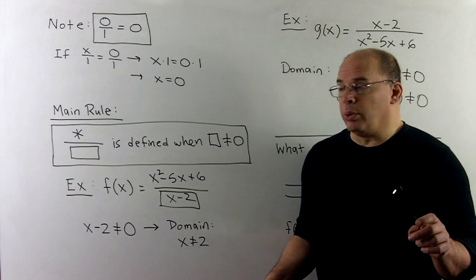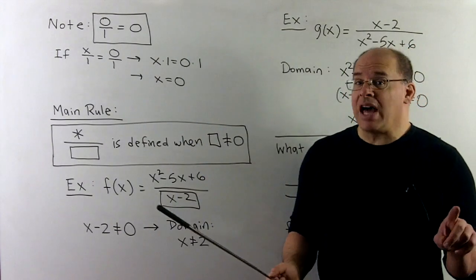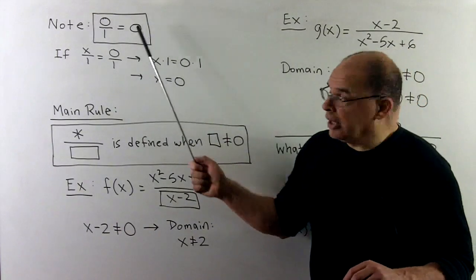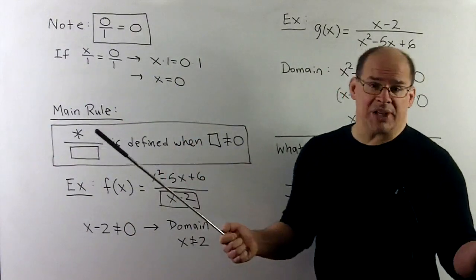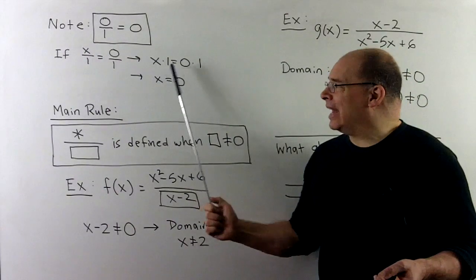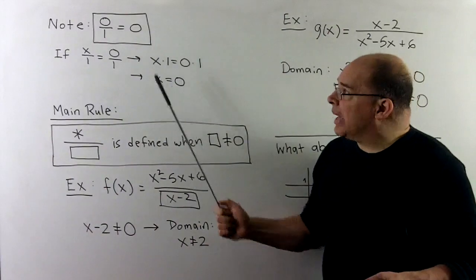Something to be careful with. 0 over 1 is equal to 0. So this is not a problem. If we proceed as before, I'll set 0 over 1 equal to x, put it as x over 1. Cross multiply, I get x equal to 0, a perfectly good number. So this makes sense.